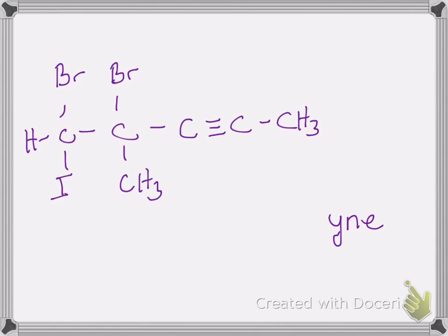To give the triple bond the lowest number possible, I start on the right-hand side and number the carbons one, two, three, four, five. If I numbered from the other direction, the triple bond would fall on carbon three; numbering this way, the triple bond falls on carbon two. From this we determine the parent name is 'pent' — a five-carbon chain — and the triple bond location is carbon two, giving us 2-pentyne.